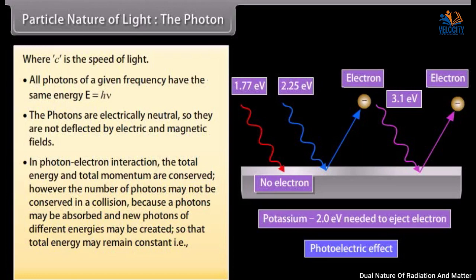In photon-electron interaction, the total energy and total momentum are conserved. However, the number of photons may not be conserved in a collision because photons may be absorbed and new photons of different energies may be created, so that total energy remains constant: hν = hν₁ + hν₂.